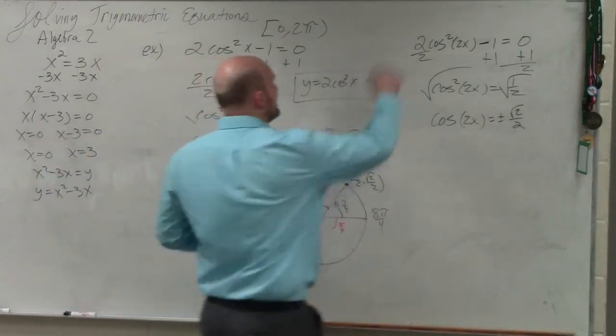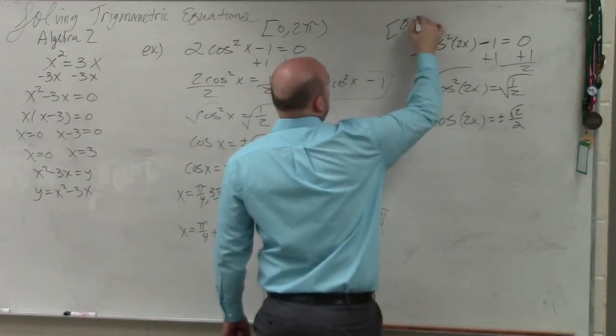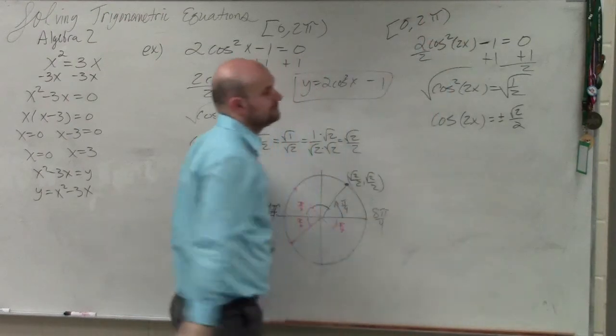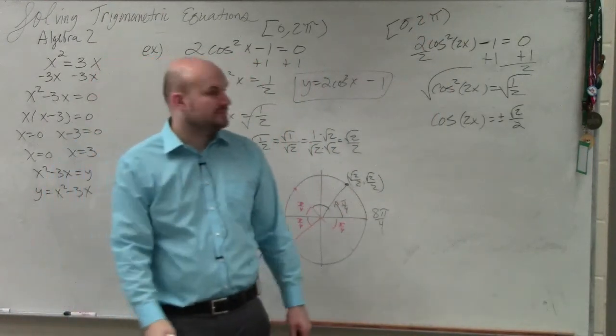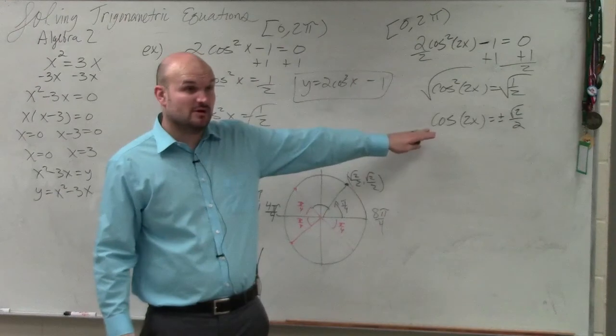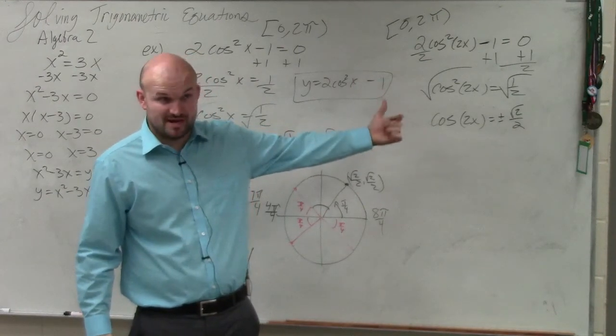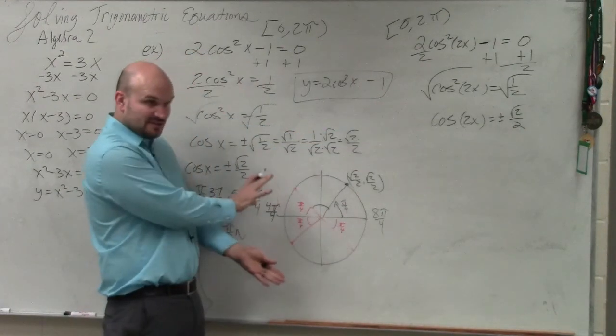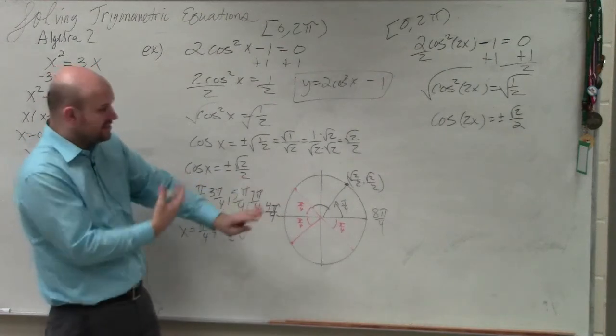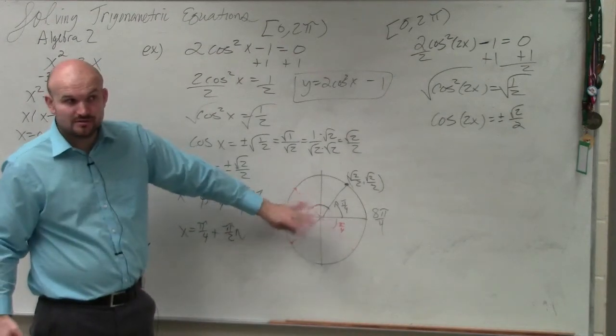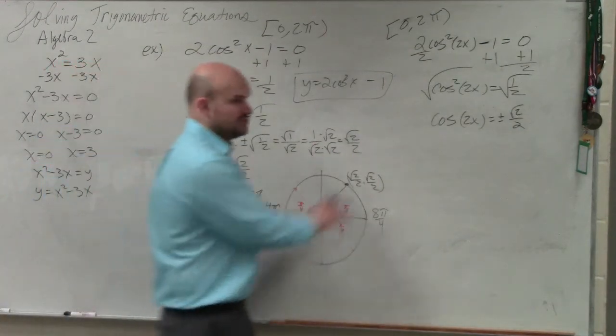Now, I want to find all the answers between 0 and 2 pi. However, we're not solving for x anymore. We're solving for 2x, right? However, to find the angles that satisfy that equation, we're still going to use what we did before. So just pretend that's x.